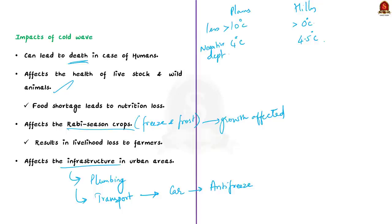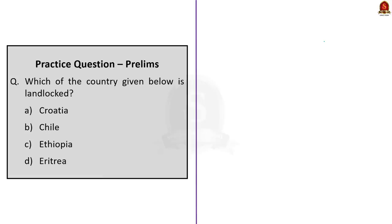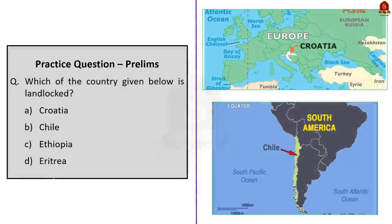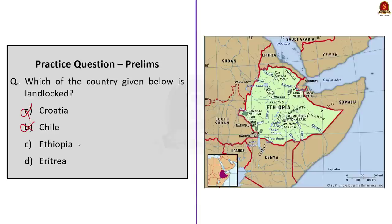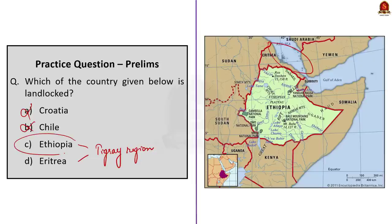Finally, with this news article discussion we are moving to the practice questions discussion session. Look at this first question: which of the countries given below is landlocked? Croatia, Chile, Ethiopia, or Eritrea. All four countries were recently in news. Croatia is not a landlocked country. Chile was recently in news due to violence which erupted after its former president was jailed, and it is also not landlocked. Both Ethiopia and Eritrea were involved in conflict due to the fallout problem of the Tigray region of Ethiopia. Eritrea has a coastline, whereas Ethiopia is landlocked. So the correct answer to this question is option C, Ethiopia.